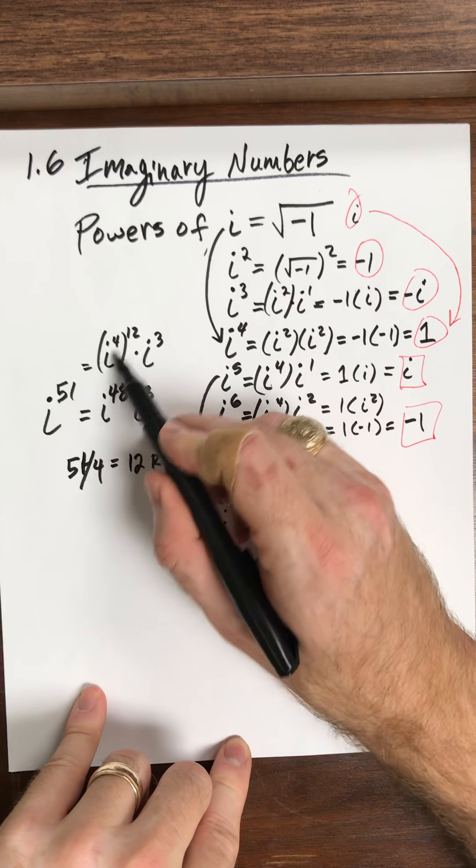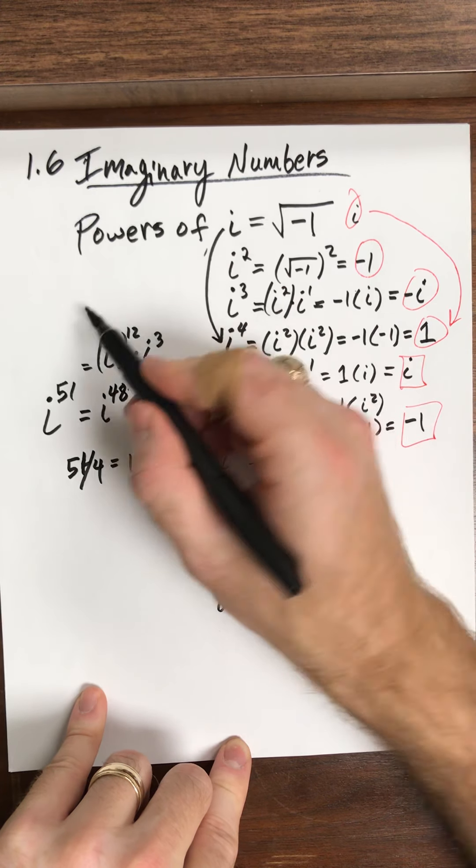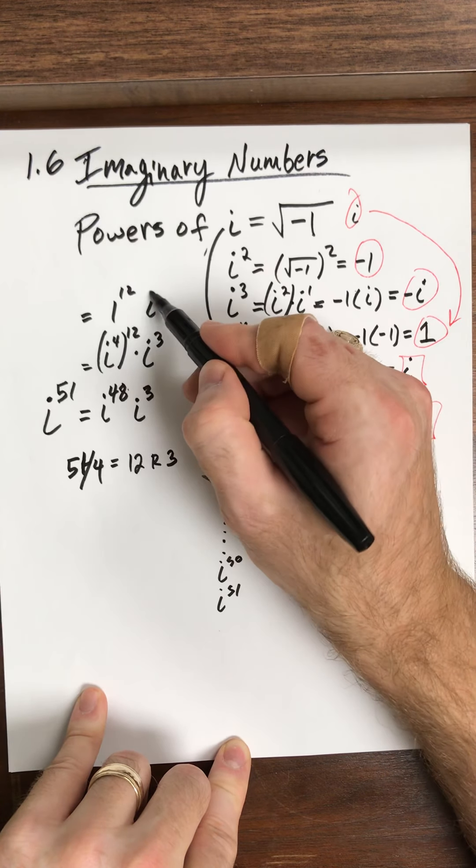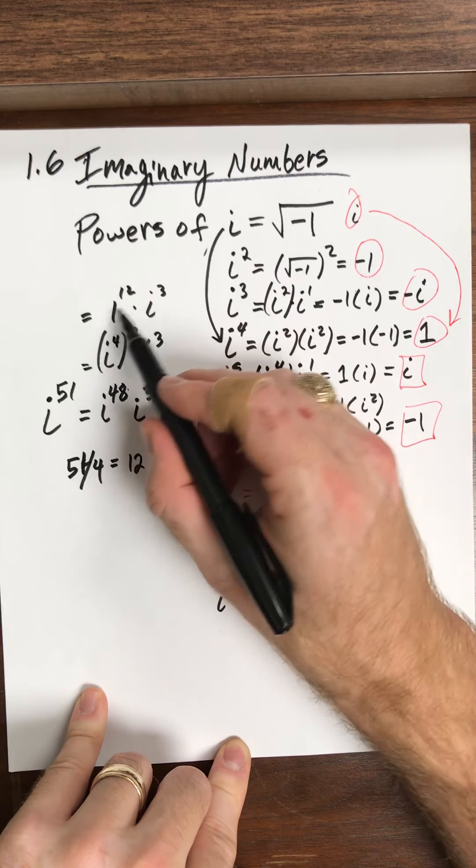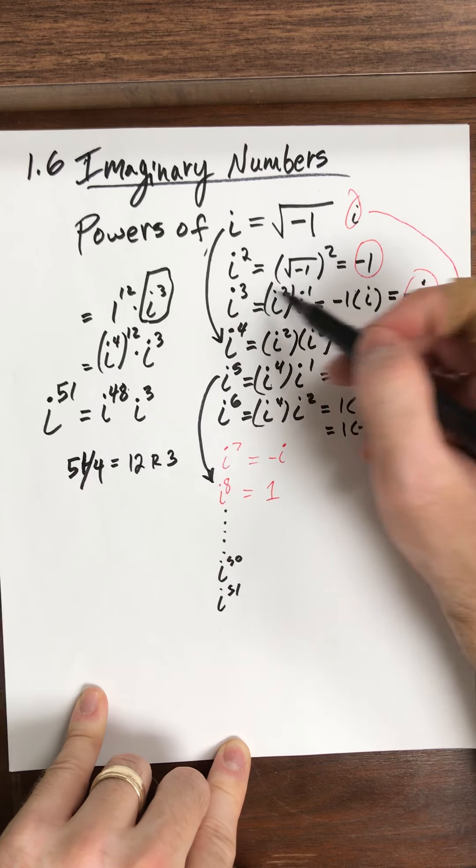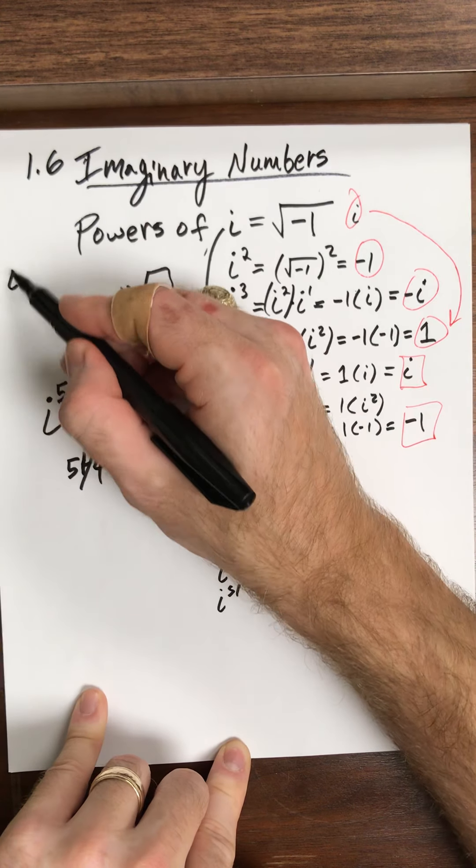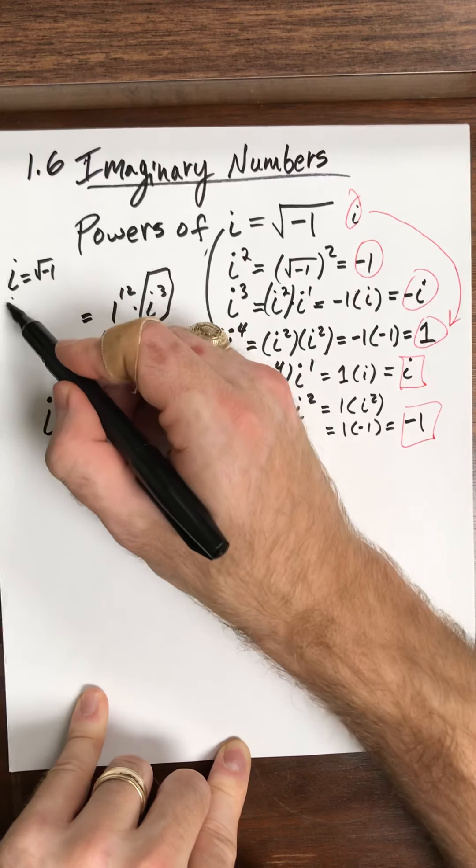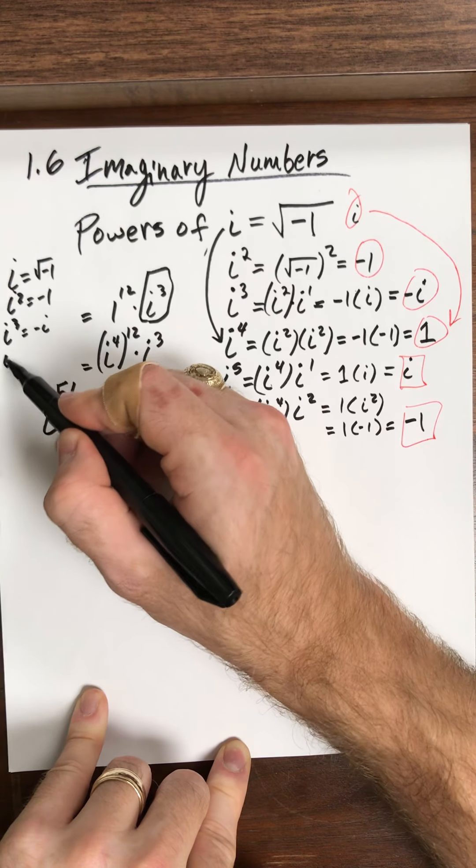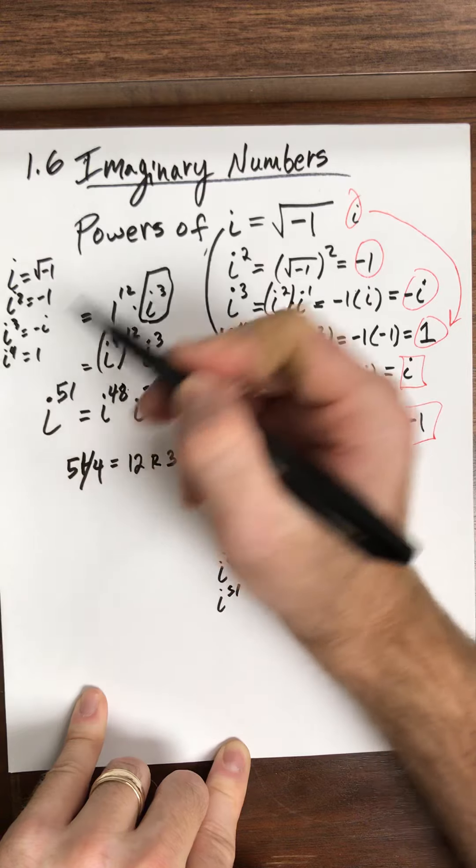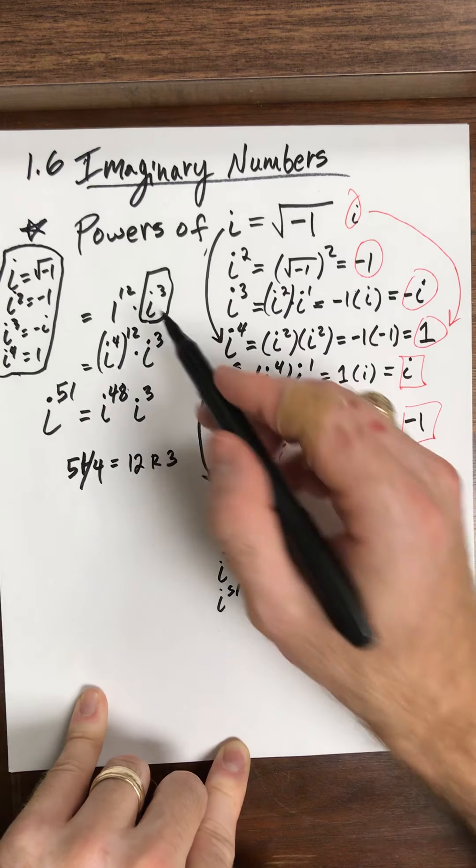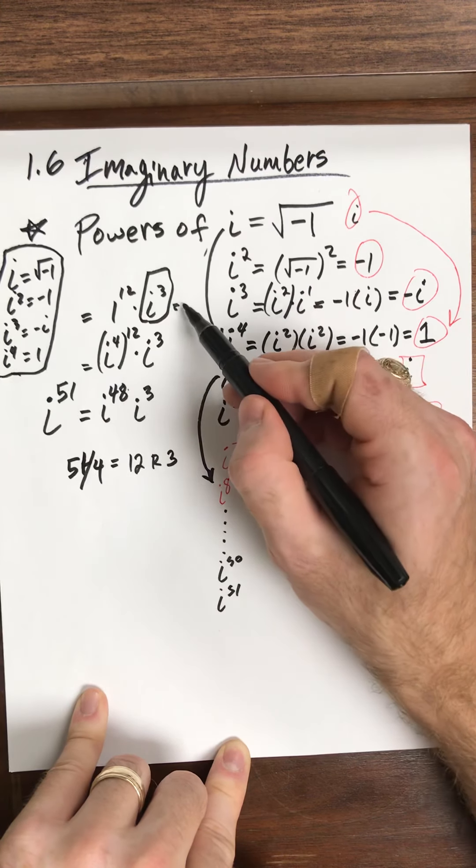Now, why is this good? Because what happens with i to the 4th? i to the 4th ends up being 1, and 1 raised to the 12 is still just 1. So really, all I'm doing here is I'm left with the remainder, i cubed. And i cubed, we know. We've got to memorize this, right? So i is square root negative 1. i squared is negative 1. i cubed is negative i. And that's really what we've got to remember. So these 4 right here, you've got to remember those. And they all kind of build off each other. So what's my answer? My answer is negative i.